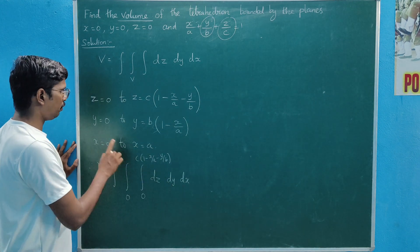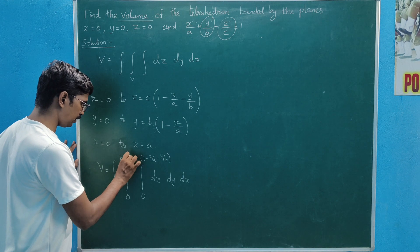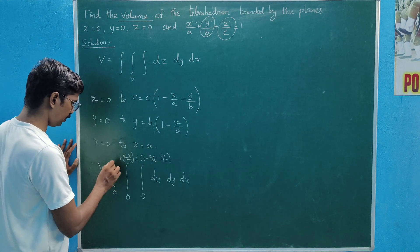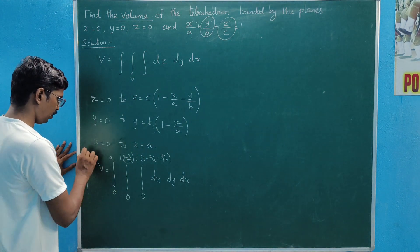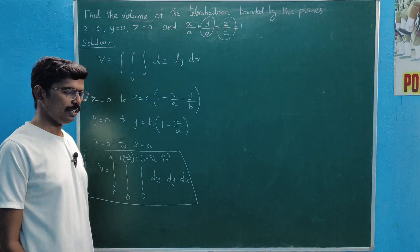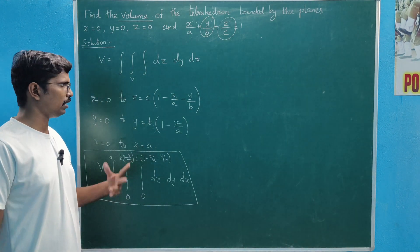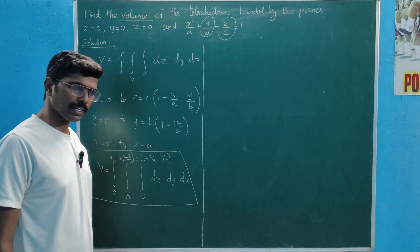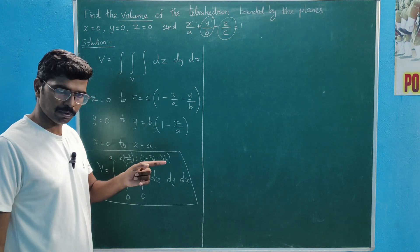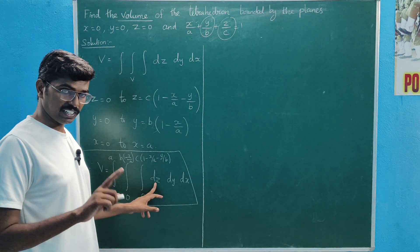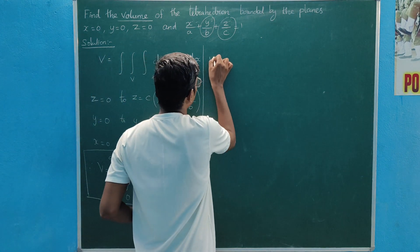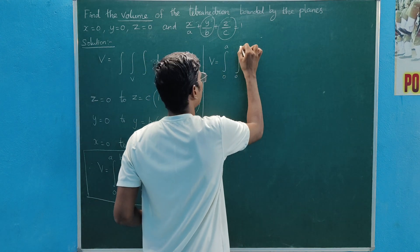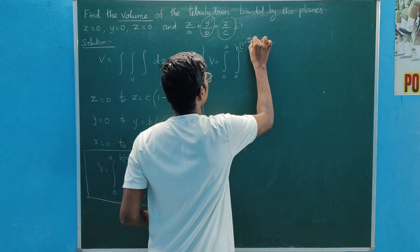The x limit is 0 to a. So V equals the integral from 0 to a, then 0 to b times 1 minus x divided by a, for the y integration.